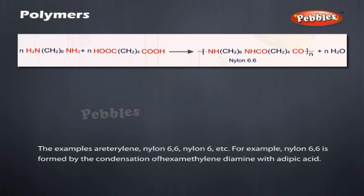Examples of condensation polymers include terylene, nylon 6,6, etc. For example, nylon 6,6 is formed by the condensation of hexamethylenediamine with adipic acid.